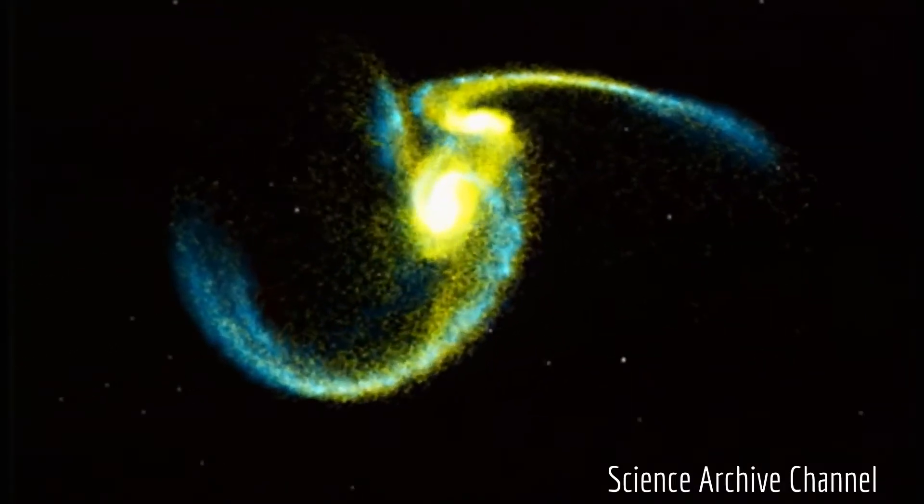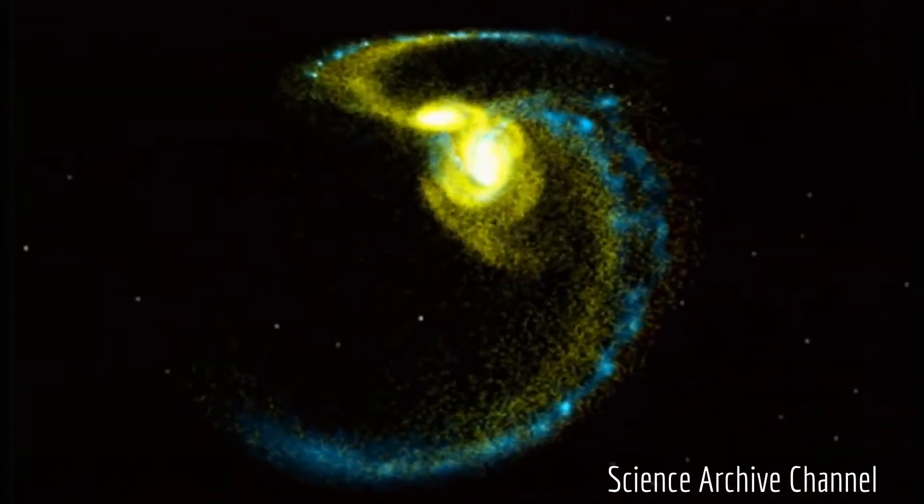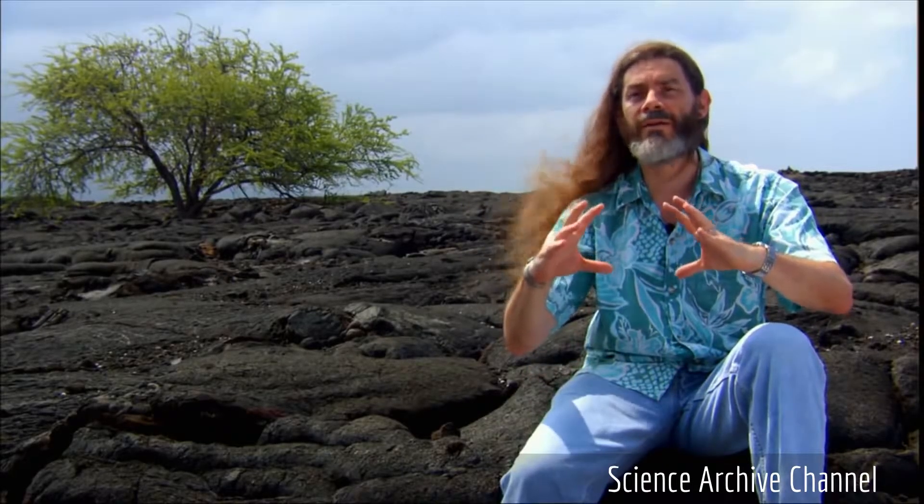If they collided head-on, you would know because the fronts were squashed up. But if they, say, sideswiped each other, which is actually more likely in galactic collisions, that would leave you a completely different pattern of wreckage, and you could interpret that.